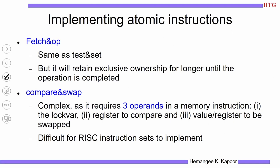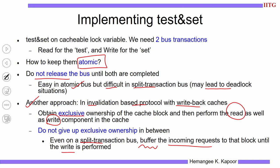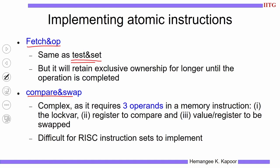A similar idea holds for the other two instructions: fetch-and-op and compare-and-swap. For fetch-and-op — we considered the fetch-and-increment version, which fetches the data, increments the value by 1, then writes the data back. The options are the same: acquire the bus without releasing, or get the block in exclusive mode, complete the operation, and write. The only difference is the operation may take slightly longer than test-and-set.